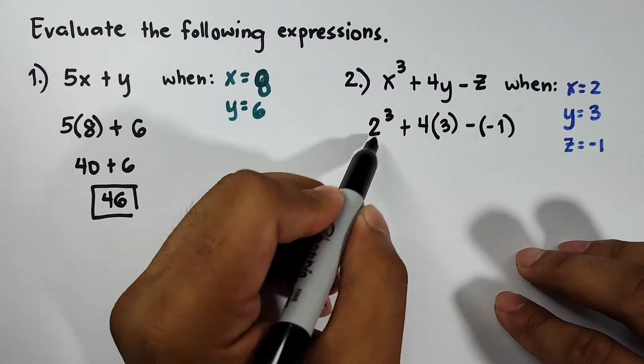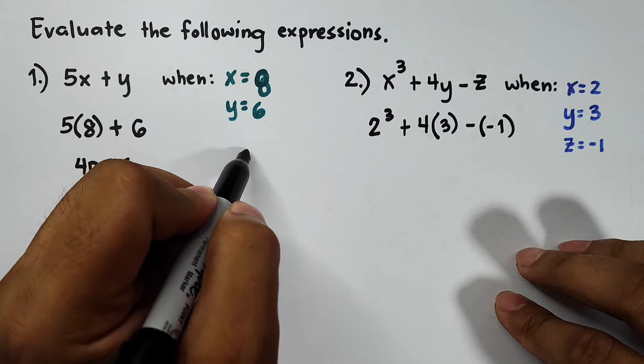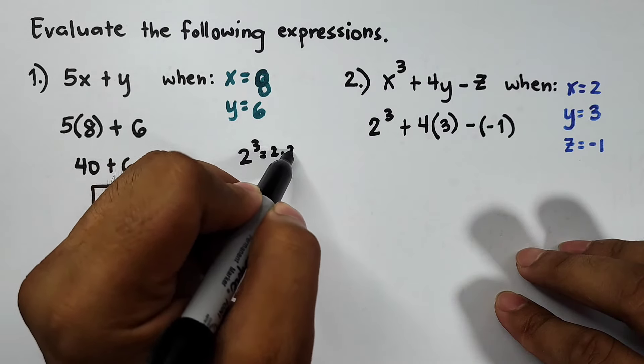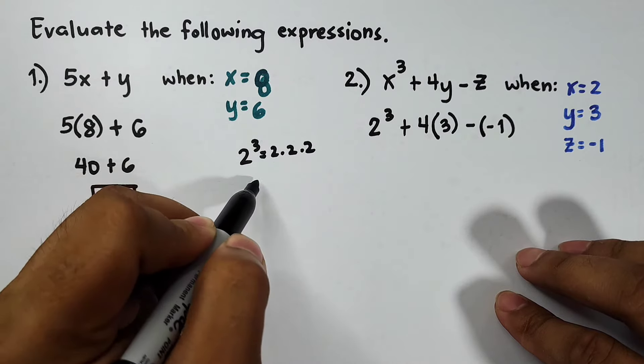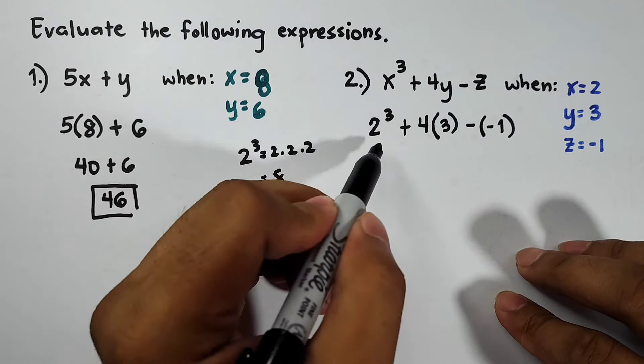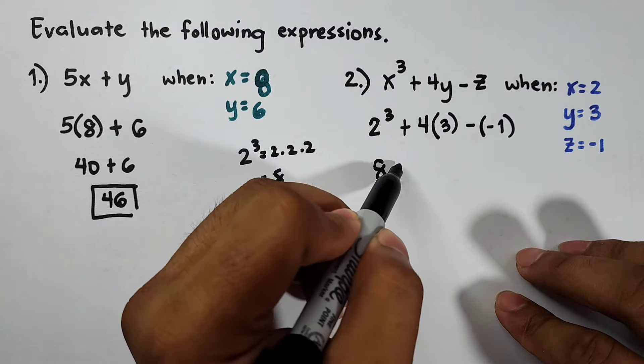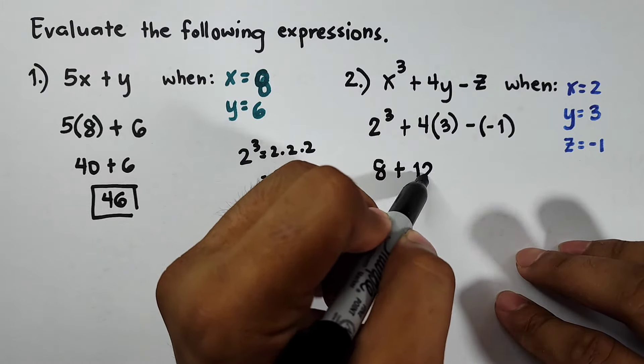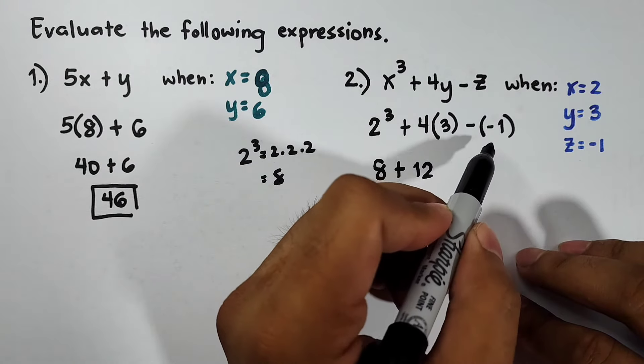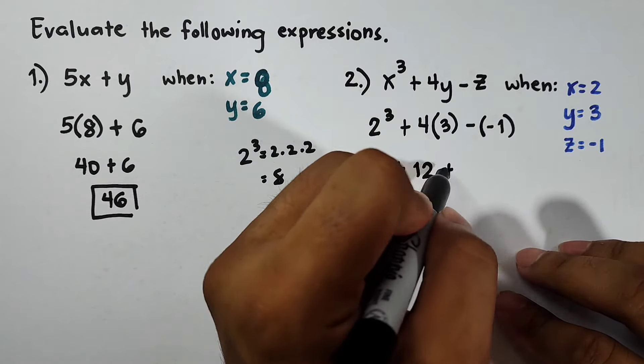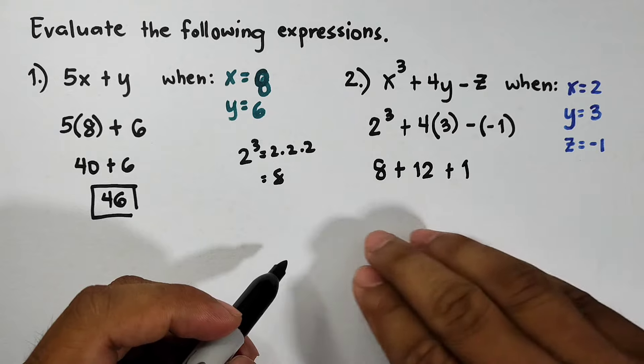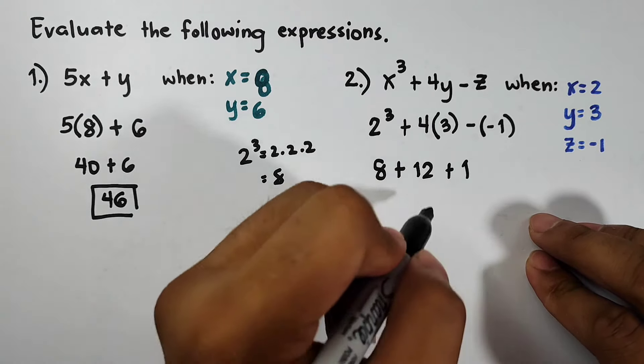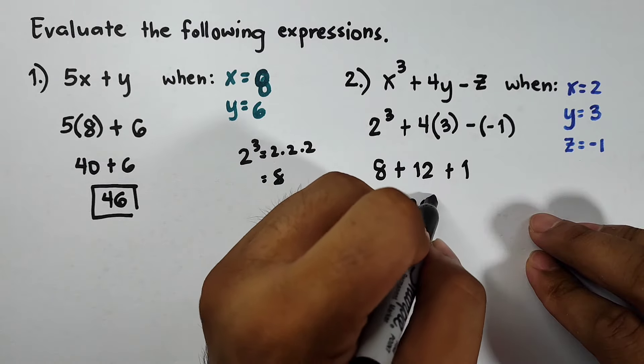Here your 2 cubed is the same as 2 times 2 times 2 and that is equal to 8. So we will replace this by 8 plus 4 times 3, that is 12. The negative times negative, first we have positive 1, and we need to add these numbers: 8 plus 12 which is 20, plus 1, that is equal to 21.